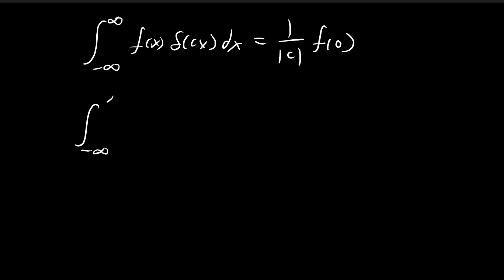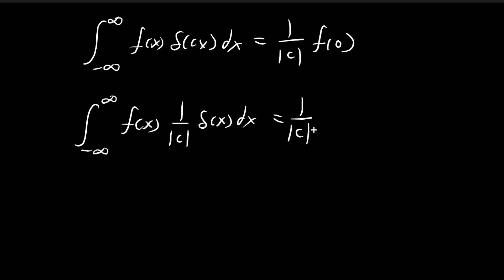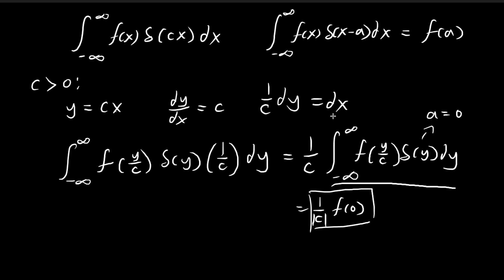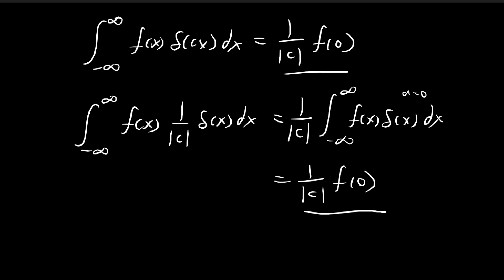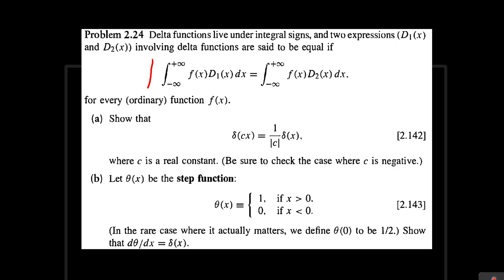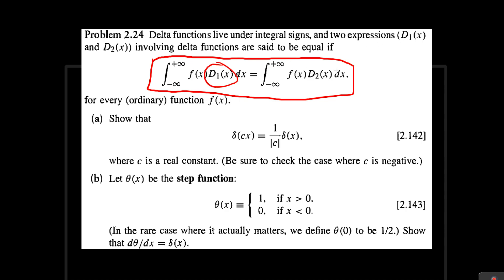Now we're going to consider a different integral. What is this integral going to be equal to? I can pull the absolute value of c outside the integral, giving this expression. To evaluate the inside, I use the sifting formula again. In this case a equals 0, so this whole thing is just equal to f of 0. So both integrals give you the same result, and by the rule given to us, since the two integrals give the same result for all f, these two functions must be identical.